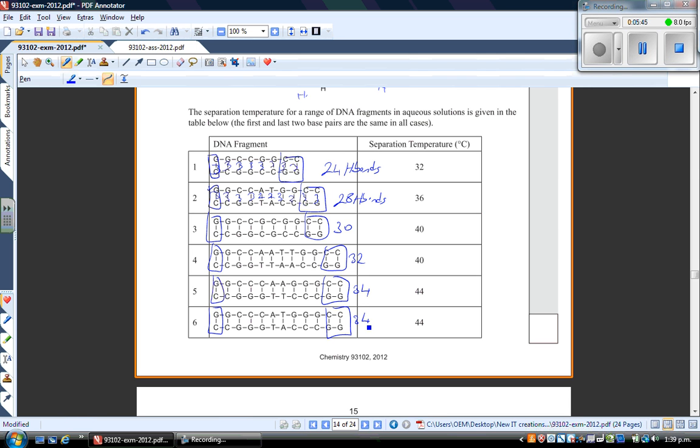So the general trend here is that as you increase the number of hydrogen bonds, so the number of hydrogen bonds is increasing, the separation temperature also increases. And that makes sense because the more bonding there is between the two fragments, between the two strands of the fragment, the harder it will be to separate them. The other thing which is happening as well is that the size of the fragment is also increasing. So this leads to more intermolecular bonding. So your Vandewall, your weak Vandewall forces. And as a result, that should also account for the slight increase in separation temperature.